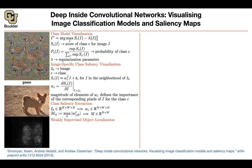One application is self-driving cars, where you want to convince your customer that your neural network is looking at the correct location — is it actually looking at the traffic light at an intersection, or the stop sign? You can show these visualizations to passengers. Another application is weakly supervised object localization. We'll do object detection later, but here you only label that the class is 'dog' — you don't provide bounding box coordinates. This is why it's called weakly supervised.